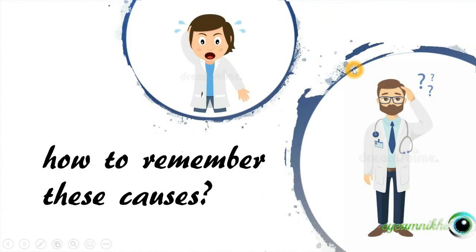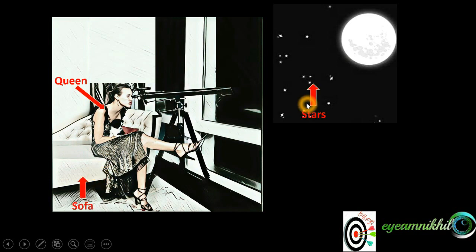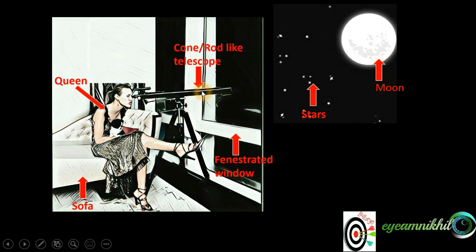So how do we remember these causes? For causes in adults, you need to have a visual memory of a girl named Queen sitting on a sofa and watching stars and moon through a fenestrated window, using her conical or rod-like telescope and peeping through its hole.